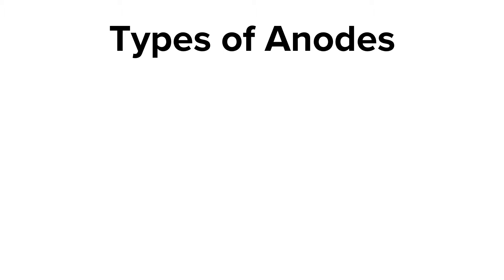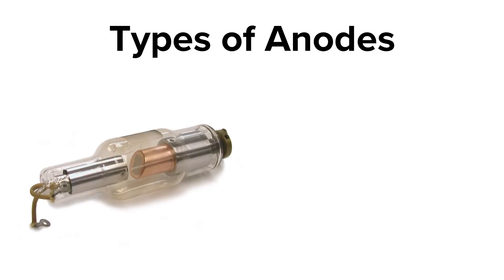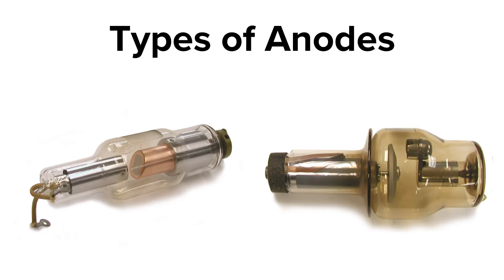There are two different types of anodes that you will see in x-ray imaging equipment. The first is a stationary anode, which is typically found in a dental x-ray machine. The other type is a rotating anode, used in general purpose radiography. Almost all of the x-ray equipment you will encounter is going to be the rotating anode type.